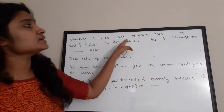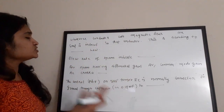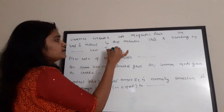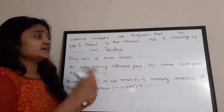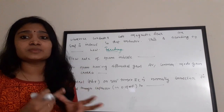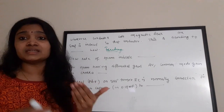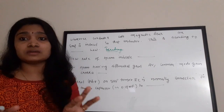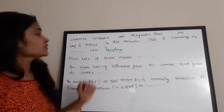Whenever a conductor cuts magnetic flux, an EMF is induced in the conductor. This is according to Faraday's law. This is also the working principle of inductors — whenever the conductor cuts magnetic flux, an EMF is generated, and the inductor opposes that change. These are the basics of inductors.